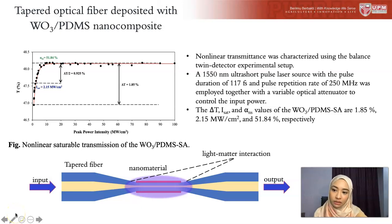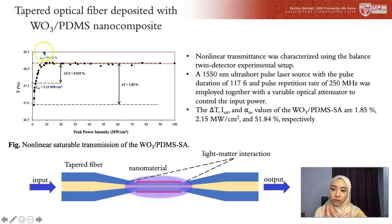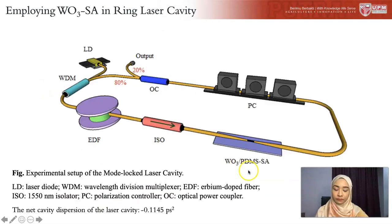We characterized the saturable absorber and it had a modulation depth of 1.85%, a non-linear saturable loss of 51.84%, and a saturation intensity of 2.15 megawatt per centimeter squared.